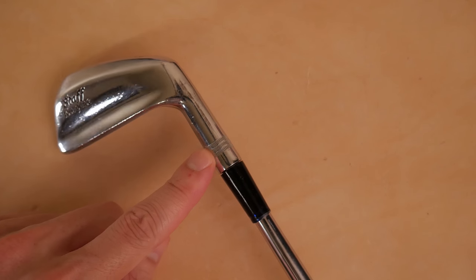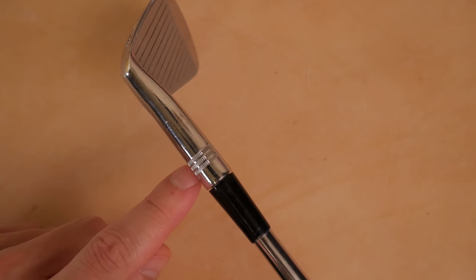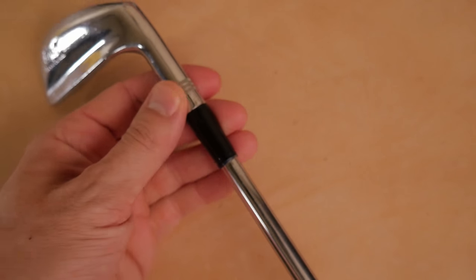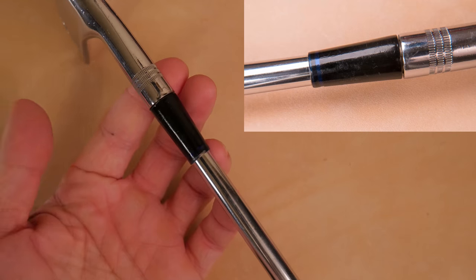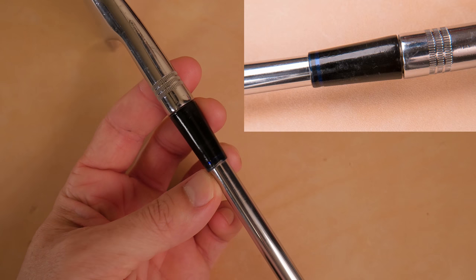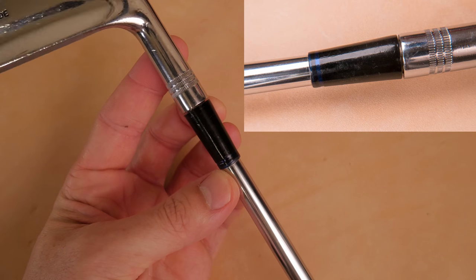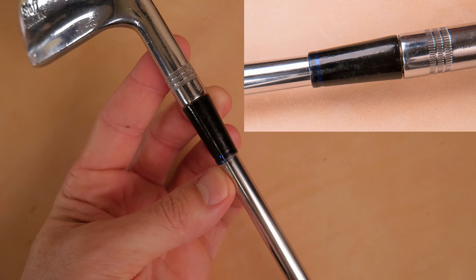And then the hosel here with some aesthetic crimping. And look at this ferrule. At first it looks like just a normal black ferrule. But if you look closely at the top, you'll see two layers of a translucent blue. Two little translucent blue rings there at the top.